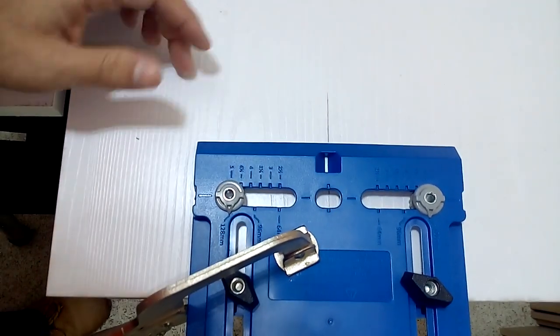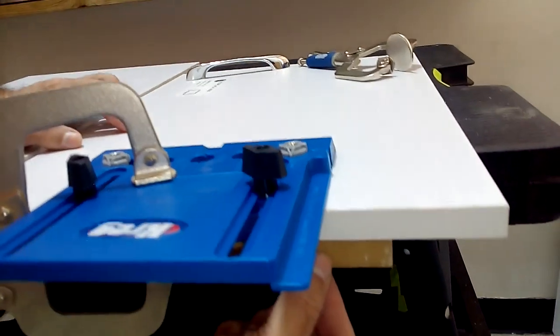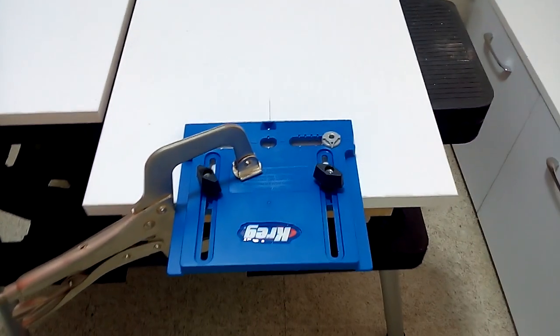I advise you to place a piece of MDF or wood behind the door that you are going to drill. This will prevent the bit from damaging the laminate on the back of the door when you drill.